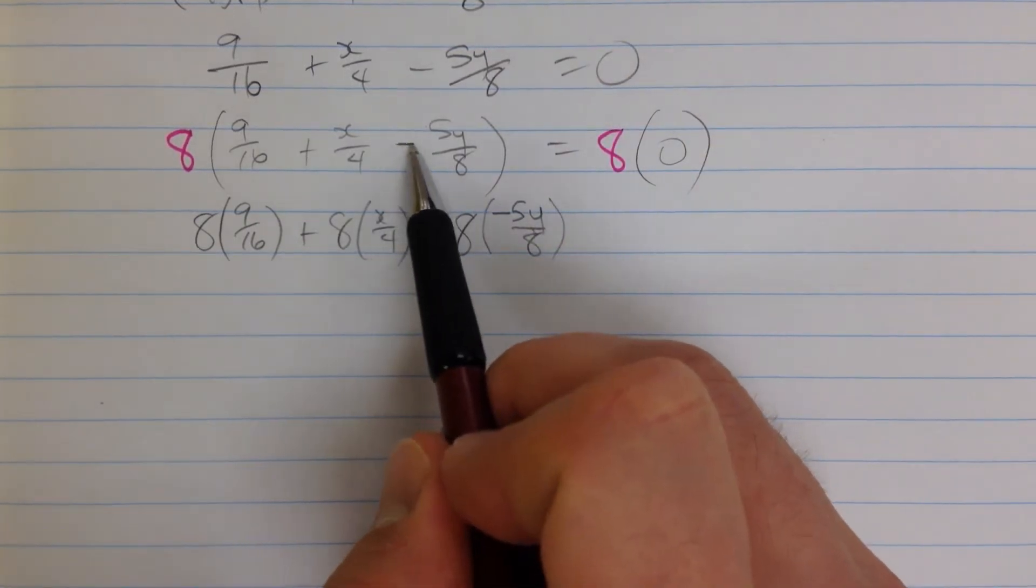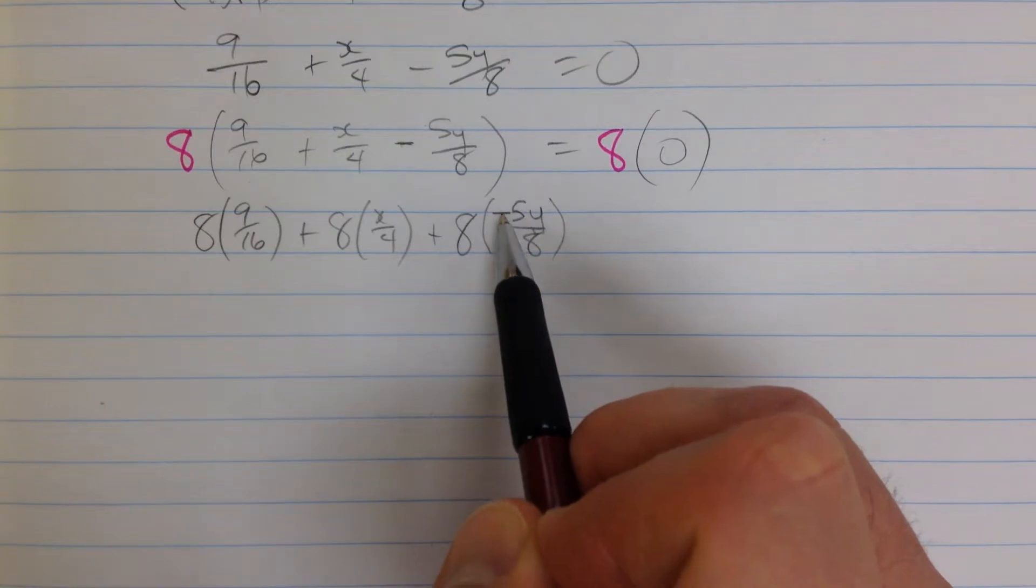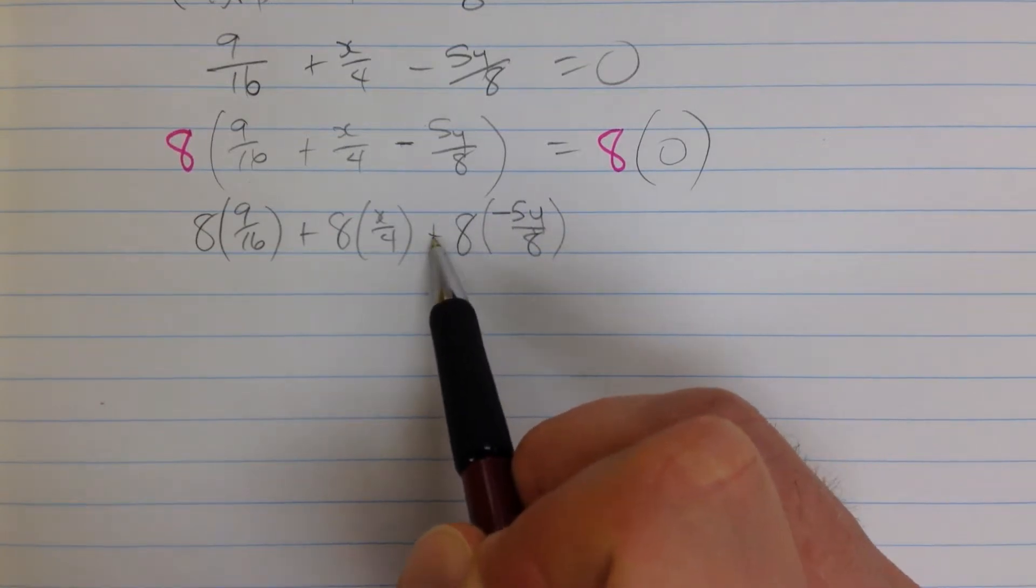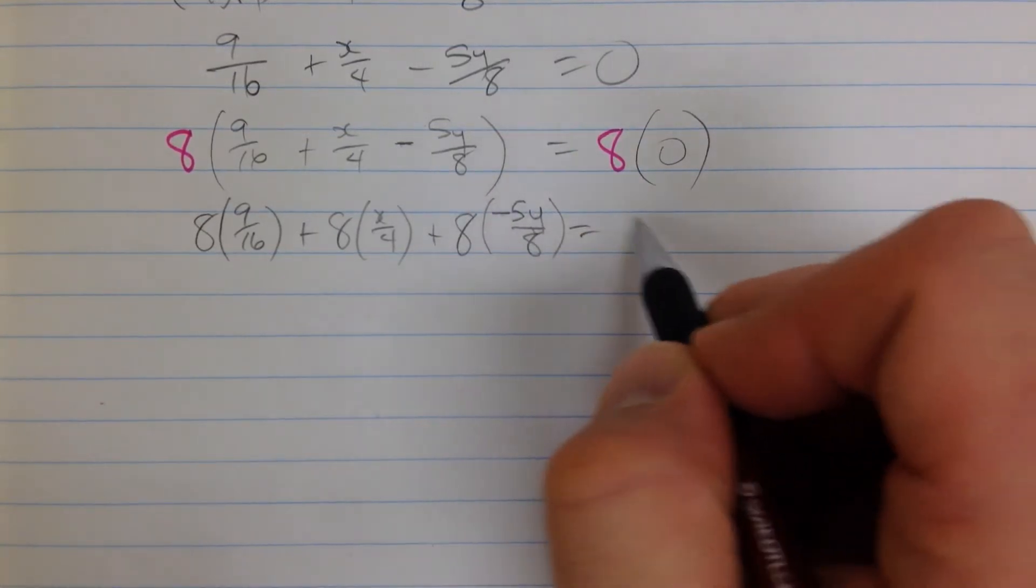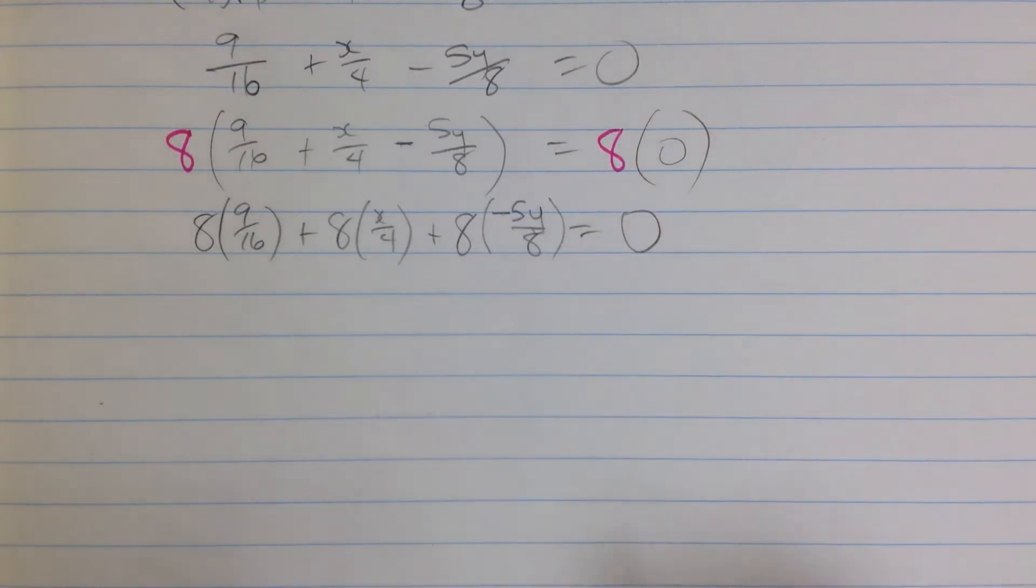You've got to have that minus sign here, or if you don't want to put it there, you can put it there, that'll be the same thing, whatever you're most comfortable with. Here 8 times 0 is 0.